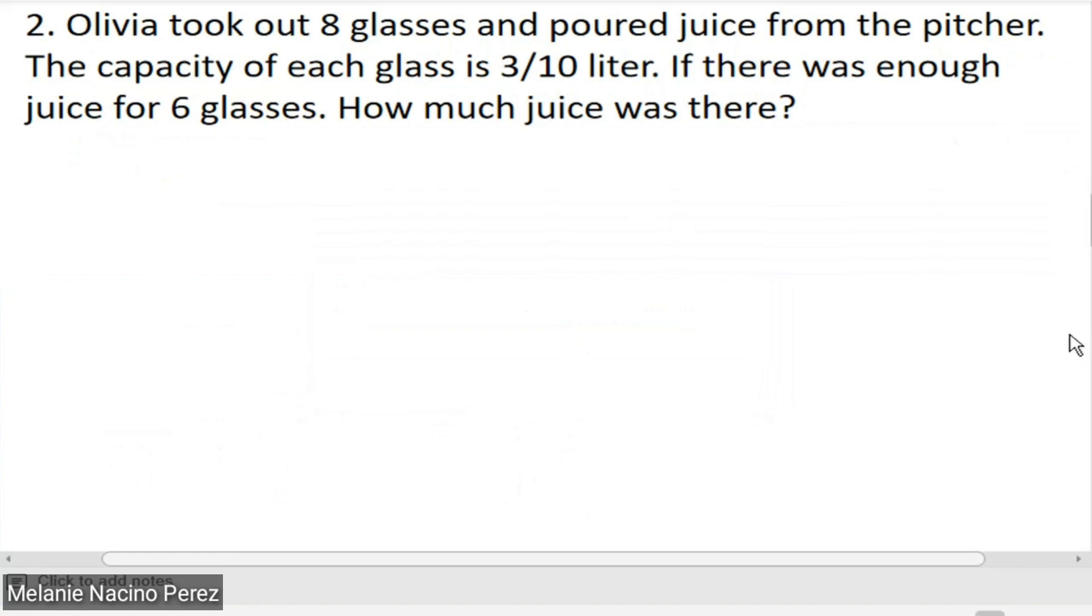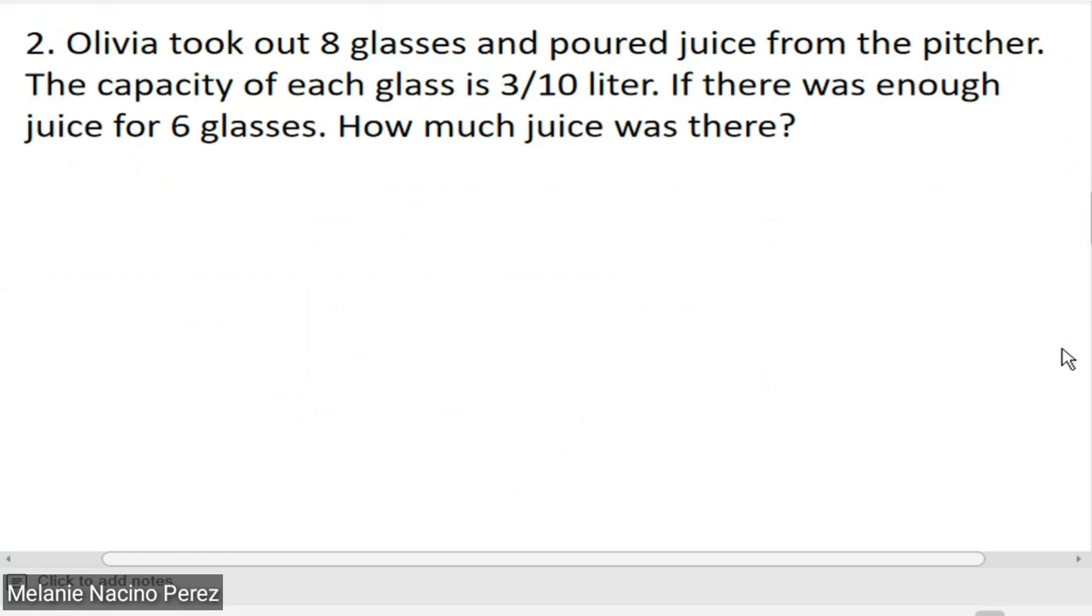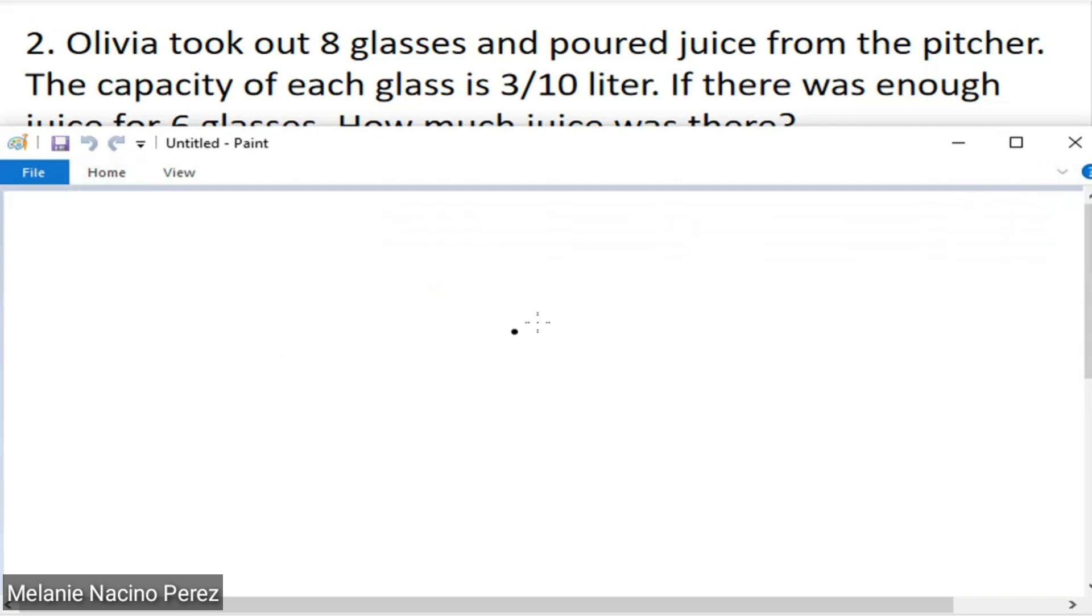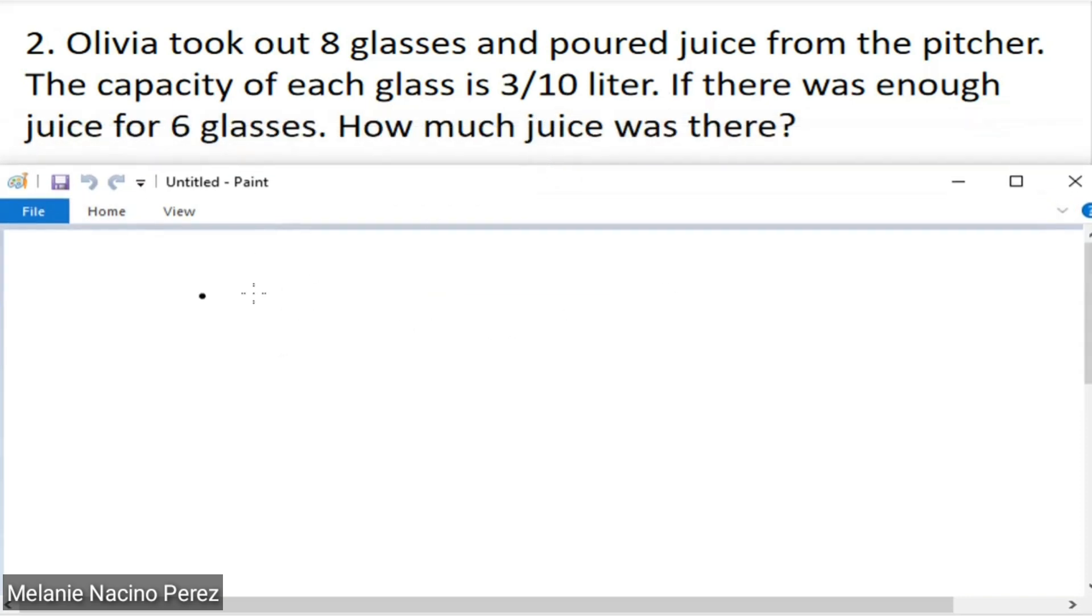Next problem: Olivia took out 8 glasses and poured juice from the pitcher. The capacity of each glass is 3/10 liter. If there was enough juice for 6 glasses, how much juice was there? What we're looking for in this second problem is 3/10 of 6, because they want to know how much juice is needed to fill 6 glasses. And it says that each glass can hold 3/10 of a liter. To get the answer, all we need to do is multiply 3/10 by 6.